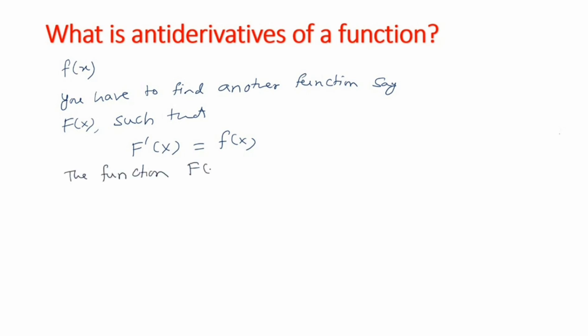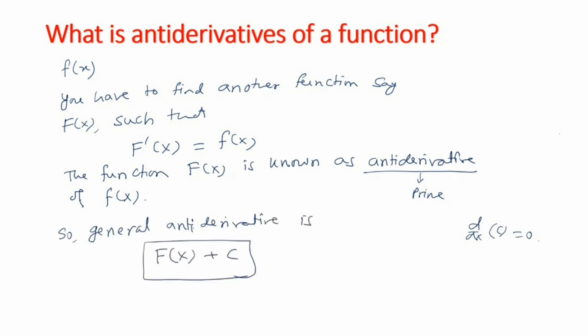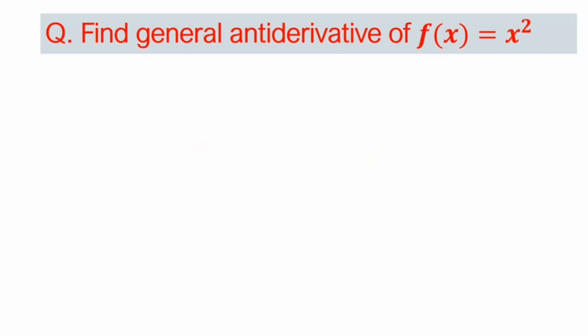The function capital F(x) is known as the anti-derivative of the given function small f(x). Basically it's called the prime anti-derivative because we know that the derivative of any constant is zero. So therefore, the general anti-derivative is capital F(x) plus c.